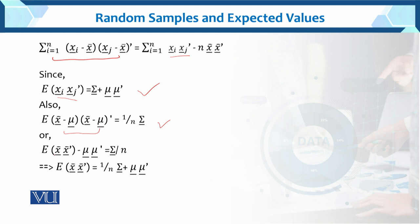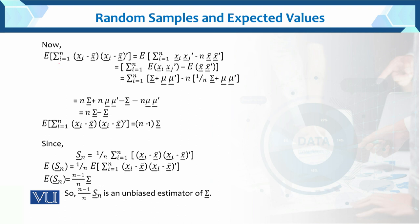Now E[x-bar x-bar-transpose minus mu mu-transpose] = sigma over n. From the previous slide result, we take the expected value of x-bar x-bar-transpose by moving the mu mu-transpose term to the other side, making it positive. So we get: E[x-bar x-bar-transpose] = sigma over n plus mu mu-transpose. We now substitute these values into the expectation of the sum of squares expression.